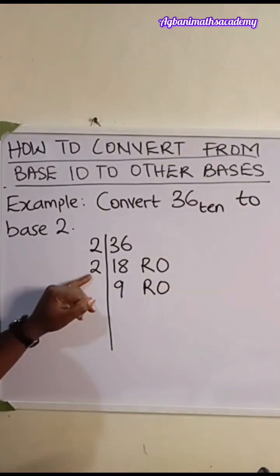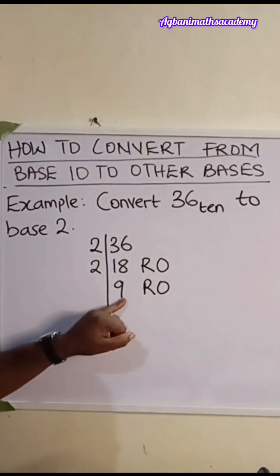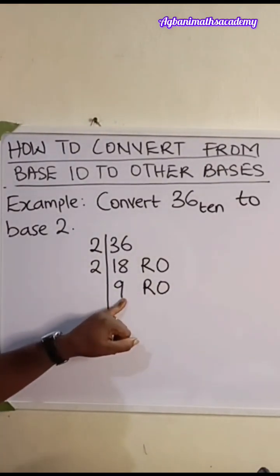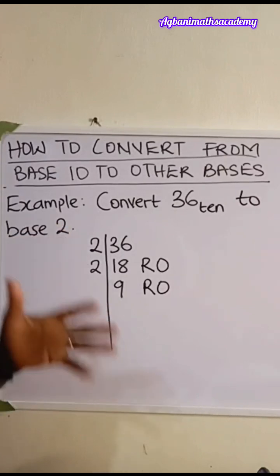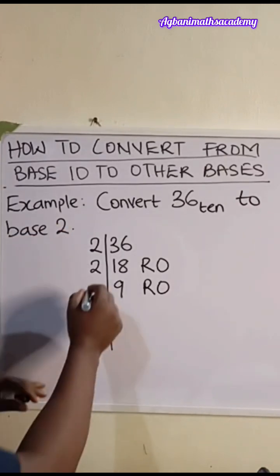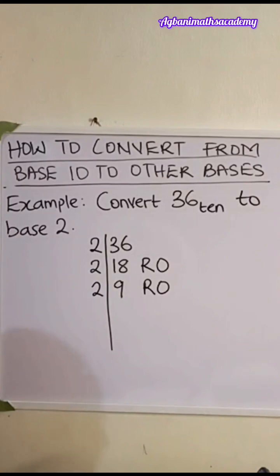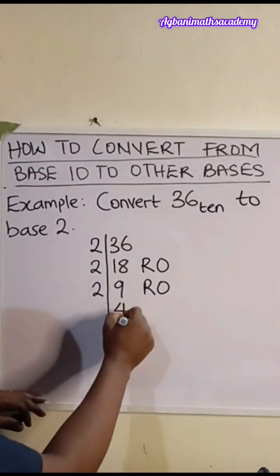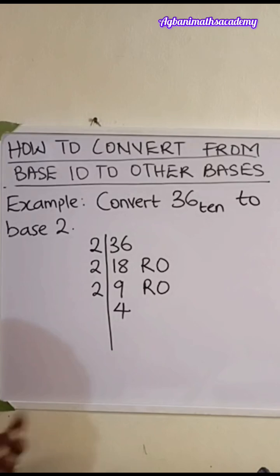We continue again with 2. Although 2 is not a factor of 9, since we are converting to base 2, we are dividing repeatedly by 2. 9 divided by 2 is going to give us 4. But when 9 is divided by 2, we have 4, but there will be a remainder. The remainder is 1.